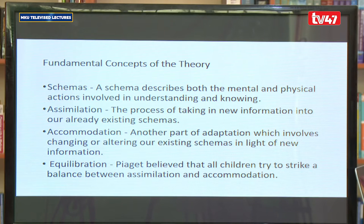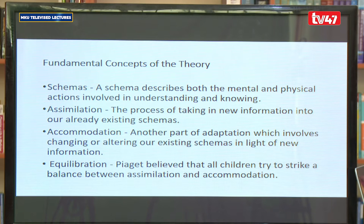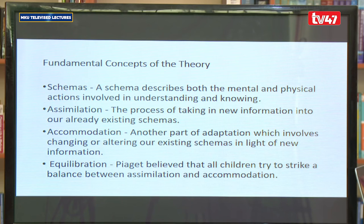Then we have equilibration, which is the process by which children try to strike a balance between assimilation and accommodation. These two processes go hand in hand. If there is assimilation but accommodation is not happening, there will be an imbalance. Equilibration is what brings that balance — where the new information coming in gets to be accommodated, and the child reaches a point where they have learned something new that they did not know previously.